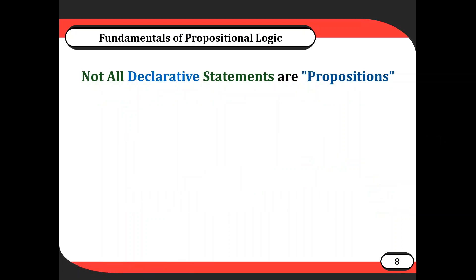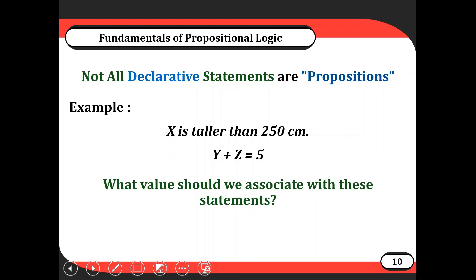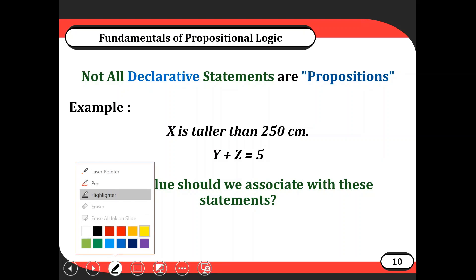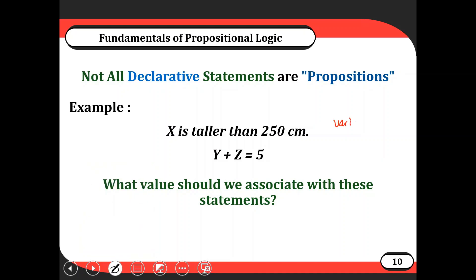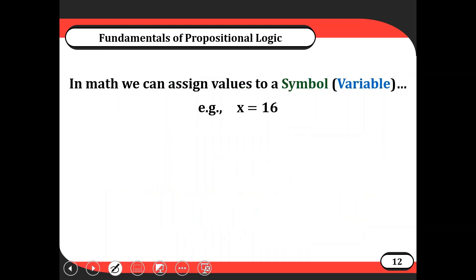Not all declarative statements are propositions. We can make a declarative statement such as 'x is taller than 250 centimeters' or 'y plus z equals 5.' We can't assign a value to these because x, y, and z are variables that can take on different values. Unless we know the values of x, y, and z, we cannot assign truth values to these statements — so they're not propositions. We'll come back to that a little bit later.